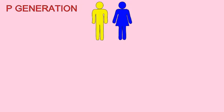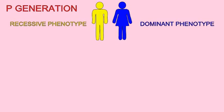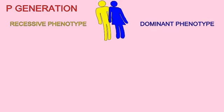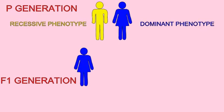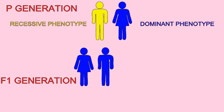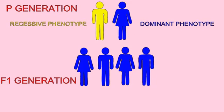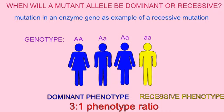Is a mutant allele dominant or recessive? This would depend on what the effects of the mutation were in a heterozygote — an individual who inherits a normal wild-type allele and a mutant allele. In many cases, such as genes encoding enzymes, heterozygotes will display a normal wild-type phenotype, and thus the mutation is classified as recessive, only affecting phenotype in those who are homozygous for the mutation.